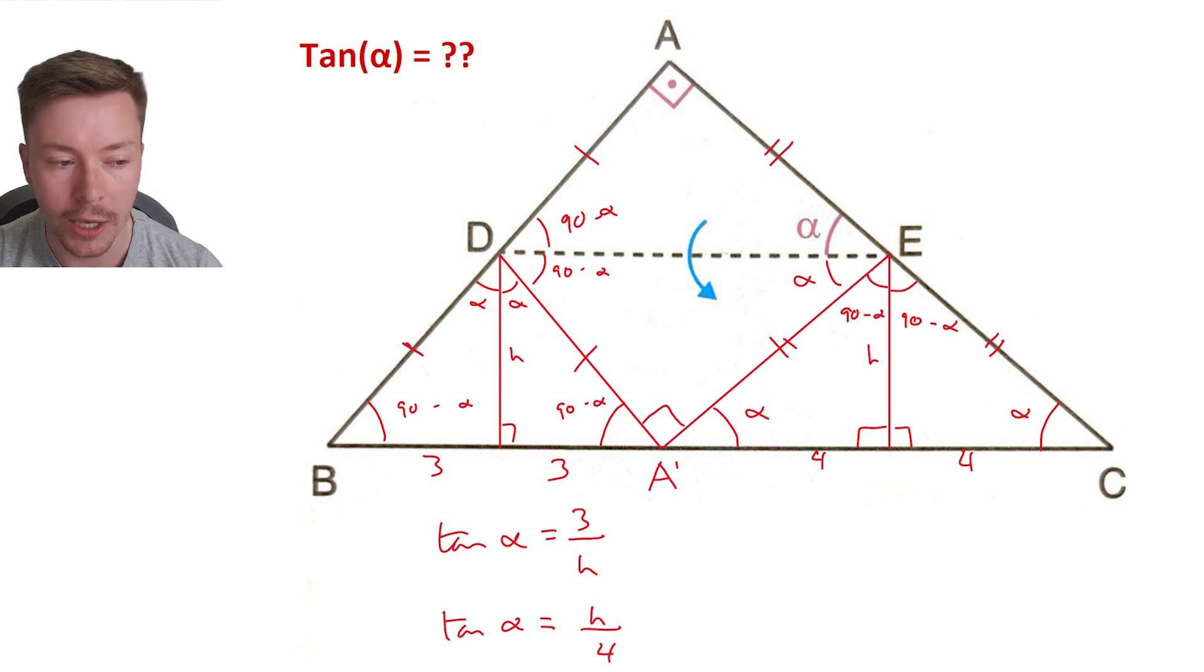And then if we rearrange one of these for H, so I went the second one, four tan alpha is equal to H, times both sides there by four. And then what we're going to do is we're going to plug that back into our first equation for H.